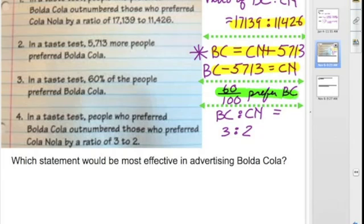And statement number 4 is a very simplistic ratio. It says every 3 people like Bolda Cola compared to 2 people who like Cola-Nola. So, you clearly see 3 is greater than 2, more people like Bolda Cola compared to Cola-Nola.